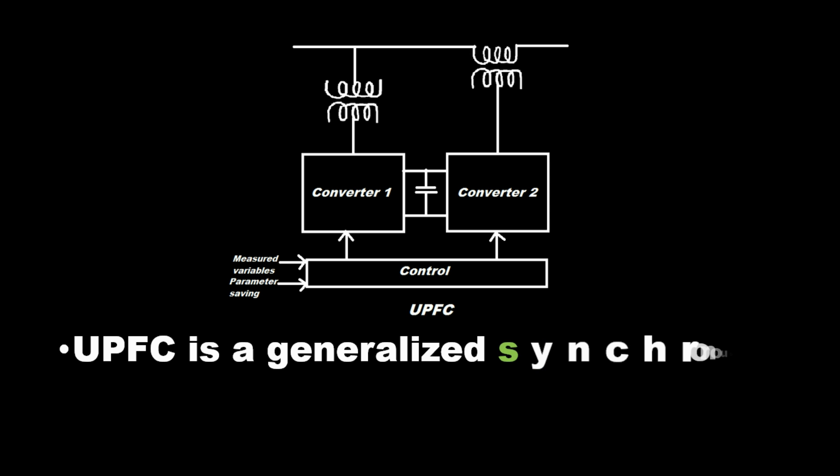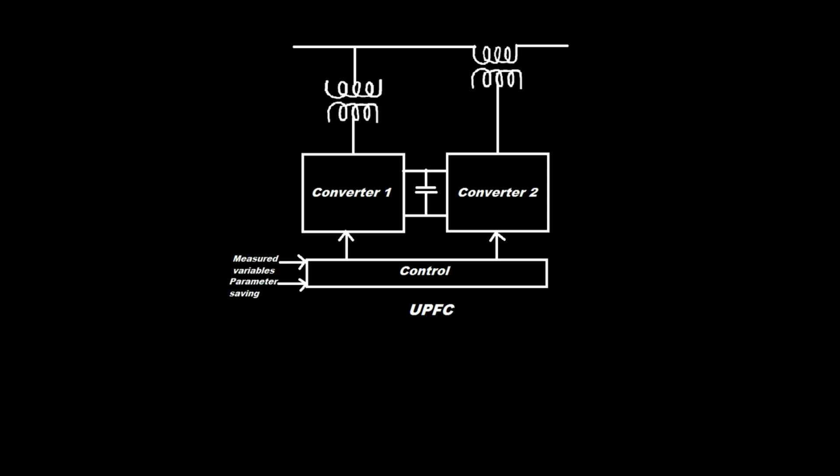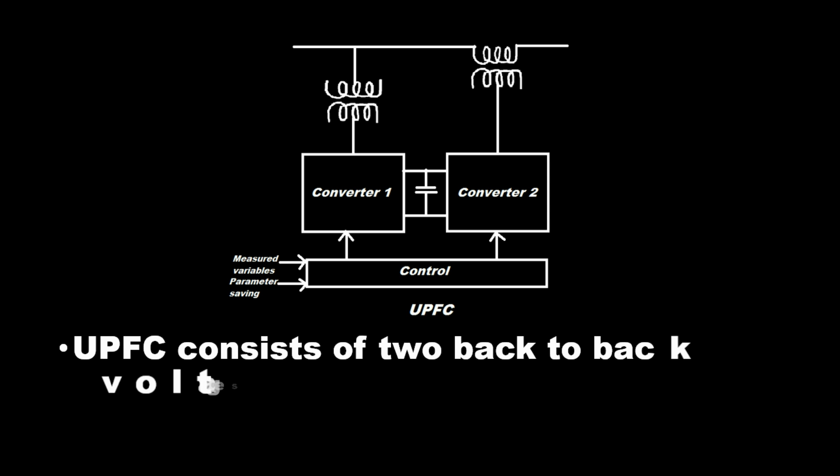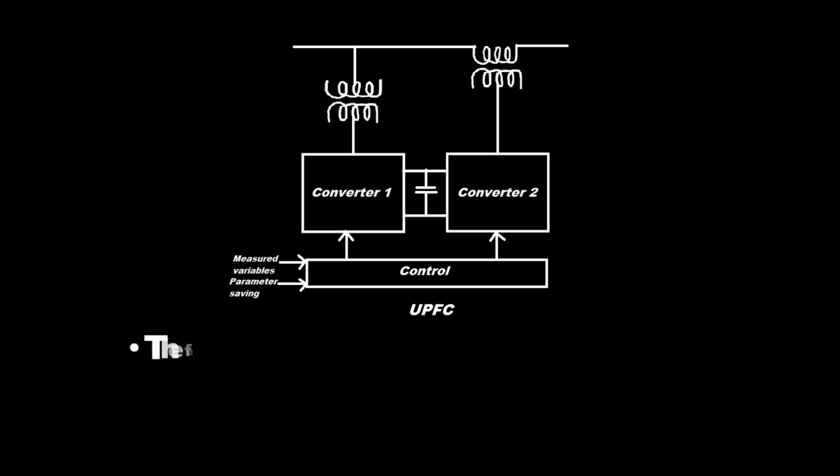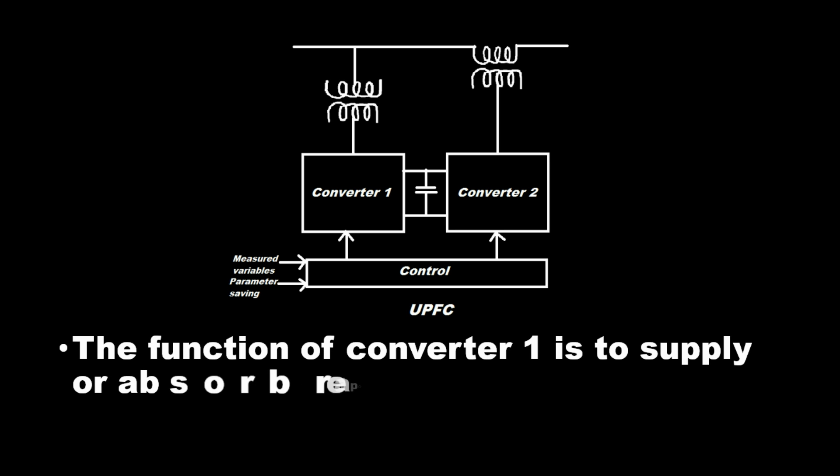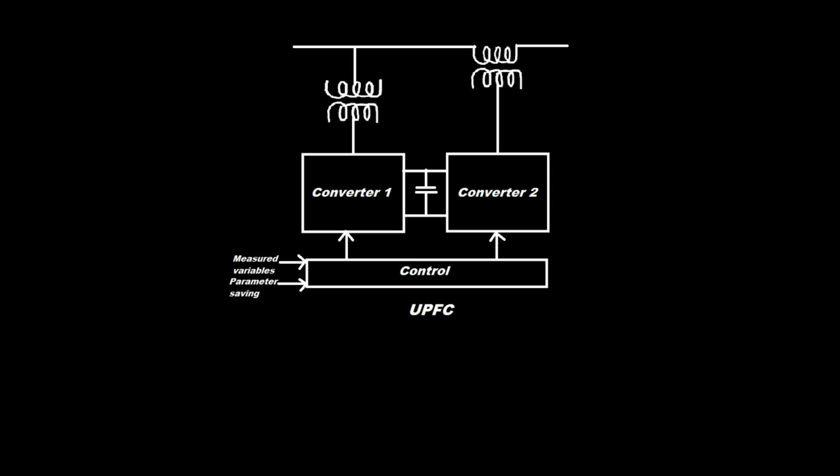UPFC is a generalized synchronous voltage source. UPFC consists of two back-to-back voltage source converters operated by a common DC link DC storage capacitor. The function of converter 1 is to supply or absorb real power demanded by converter 2.